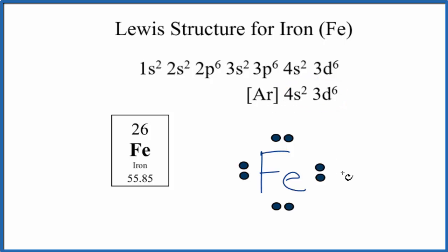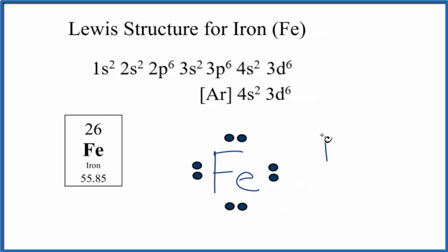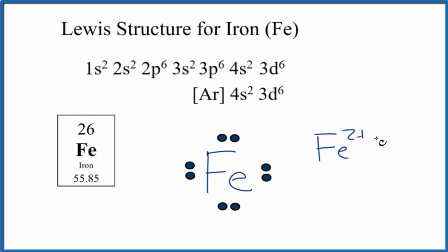Do understand though that iron, because it's a transition metal, it doesn't necessarily use all of these valence electrons when it bonds. Most often it'll lose either two or three electrons of these valence electrons to form the Fe2+ and the Fe3+ ions.